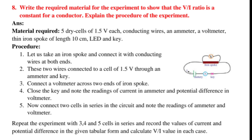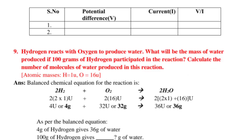Question number 9. Hydrogen reacts with oxygen to produce water. What will be the mass of water produced if 100 grams of hydrogen participated in the reaction? Calculate the number of molecules of water produced in this reaction. Atomic masses: H equals 1, O equals 16. Answer: Balanced chemical equation for the reaction is...